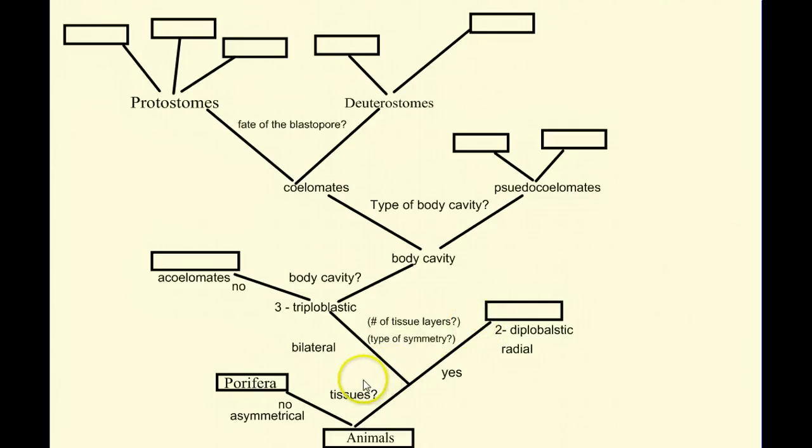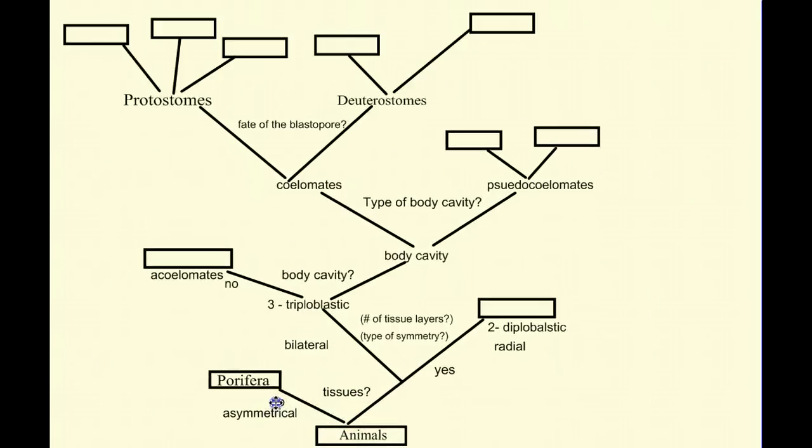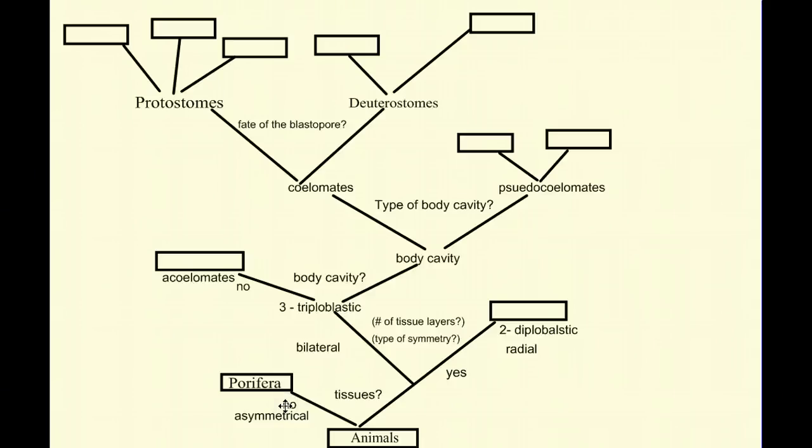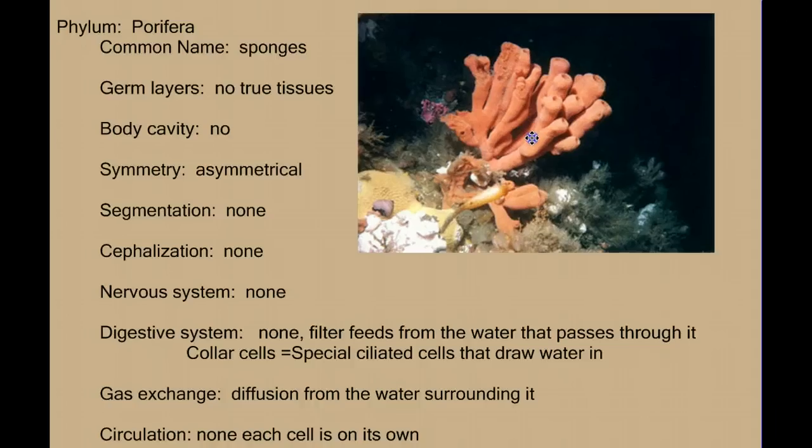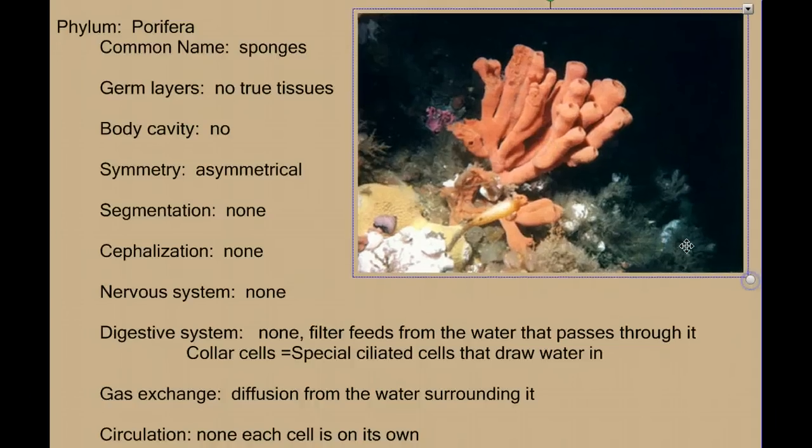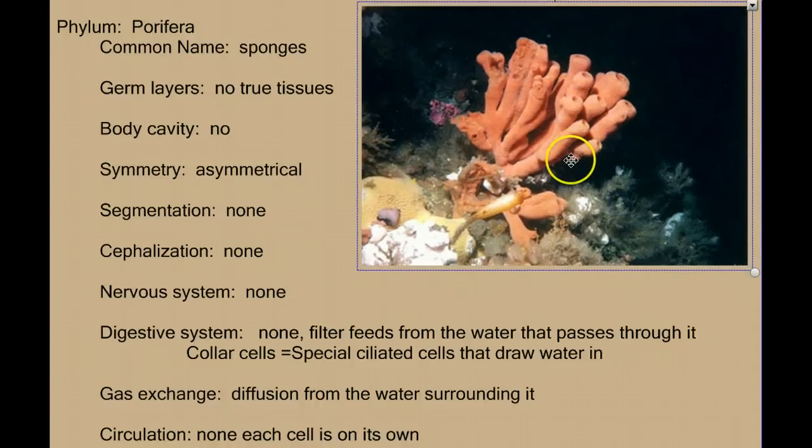So let's get started. Our first stop is down our branch where we find animals with no true tissues and no symmetry, phylum Porifera. An example would be sponges. Sponges are very simple animals with no true tissues. While we see that it can be a fairly large multicellular animal, there are no tissues organized in specialized systems or organs. They lack symmetry and there's no body cavity.